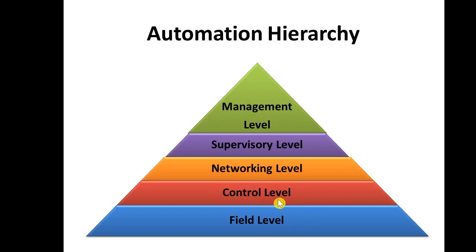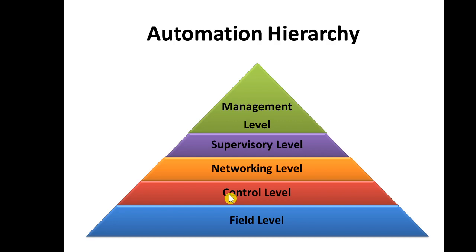Next is the control level. The control level is the intelligent process control — it takes data from the field level and processes it. The field-level devices give a signal proportional to the measured value, such as temperature, to the control device. The control device then takes action according to those inputs, such as turning devices on or off.